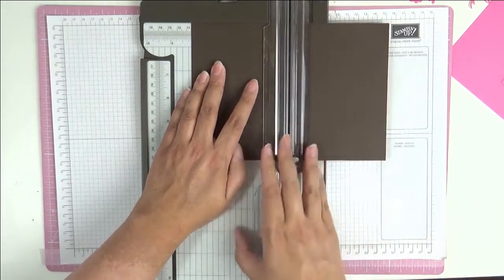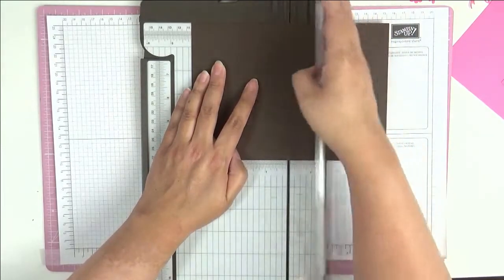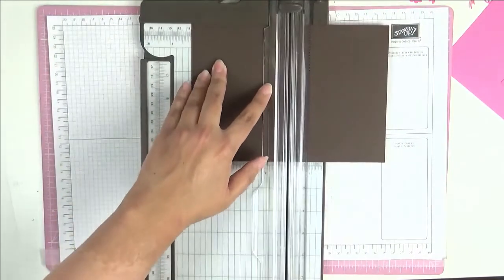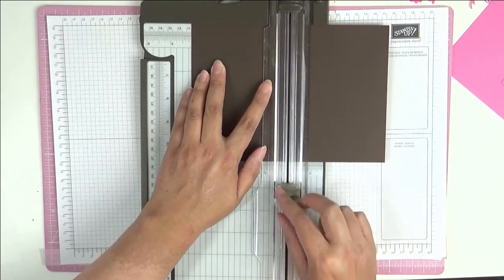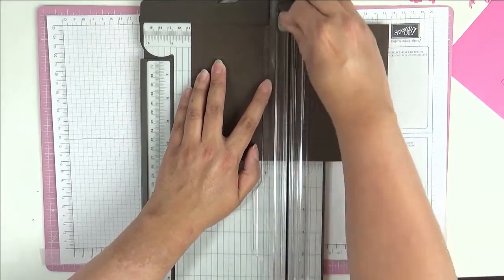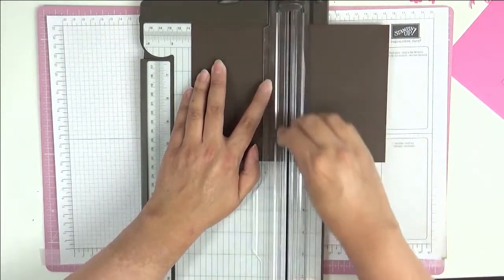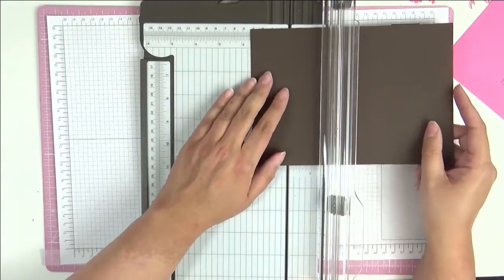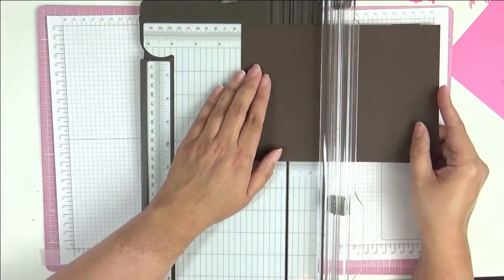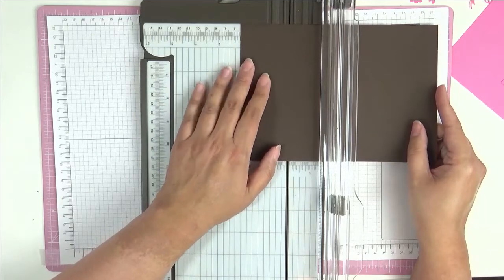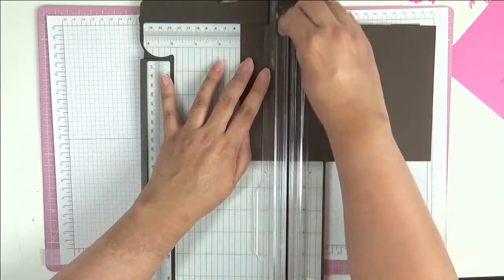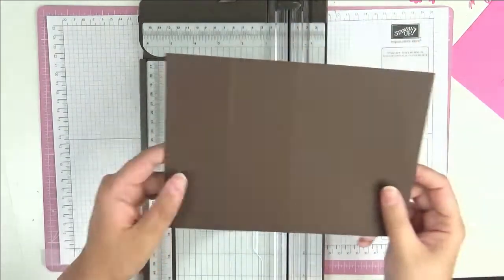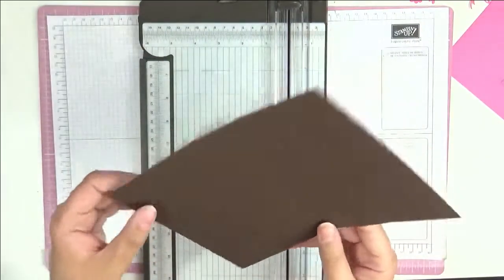So the first score I'm going to do is at ten and a half centimeters. Now your scoring blade, I'm using my trimmer here, scoring blade is this light gray one here. So we're going to score at ten and a half centimeters just like that, and then we need to score at half of ten and a half centimeters which is 5.25, and this is why I use the trimmer. It's so easy with this, and just score there and that's our piece done there. So let's set that aside because we've got a little bit more scoring to do.